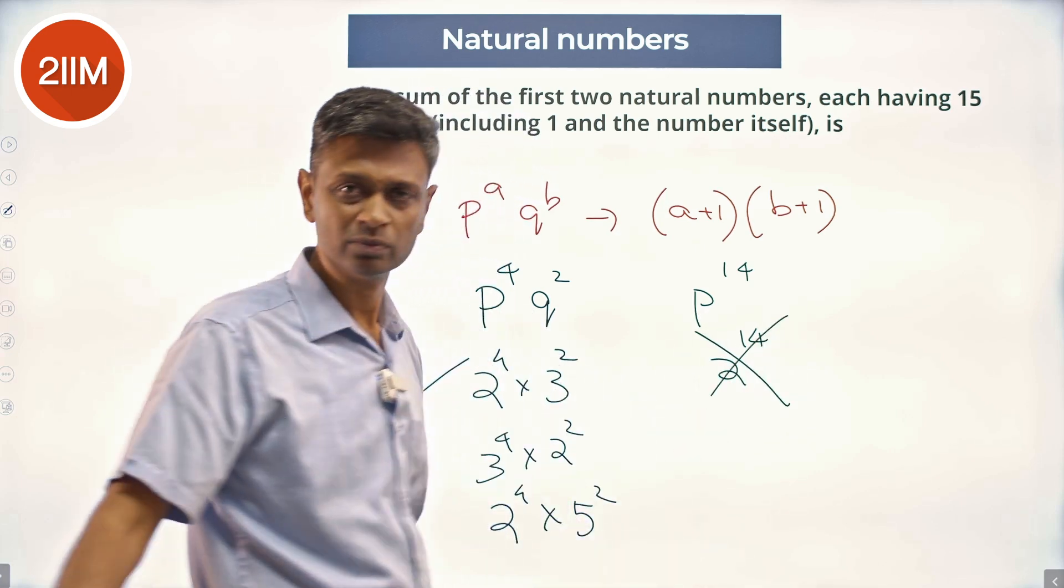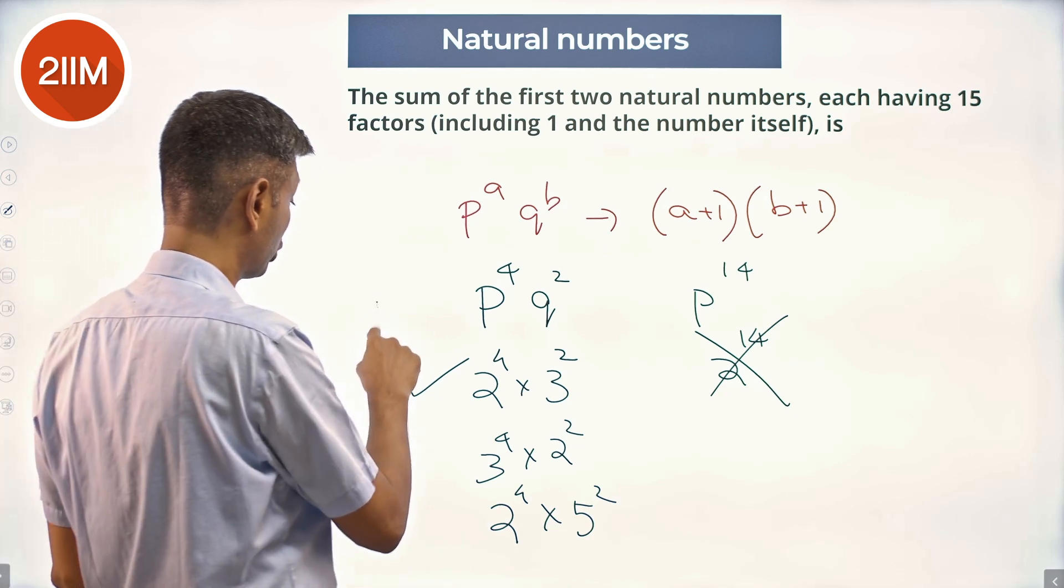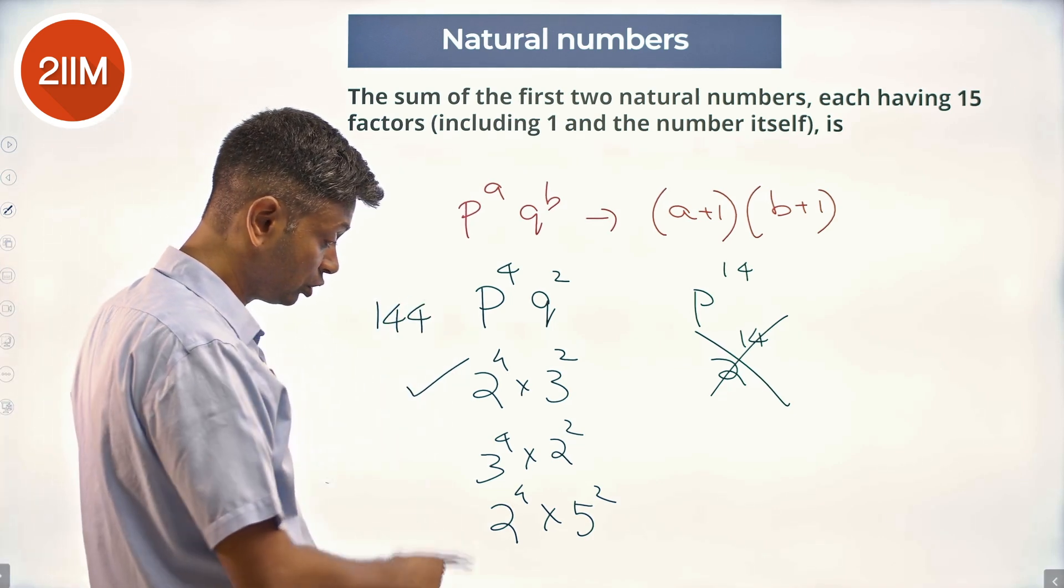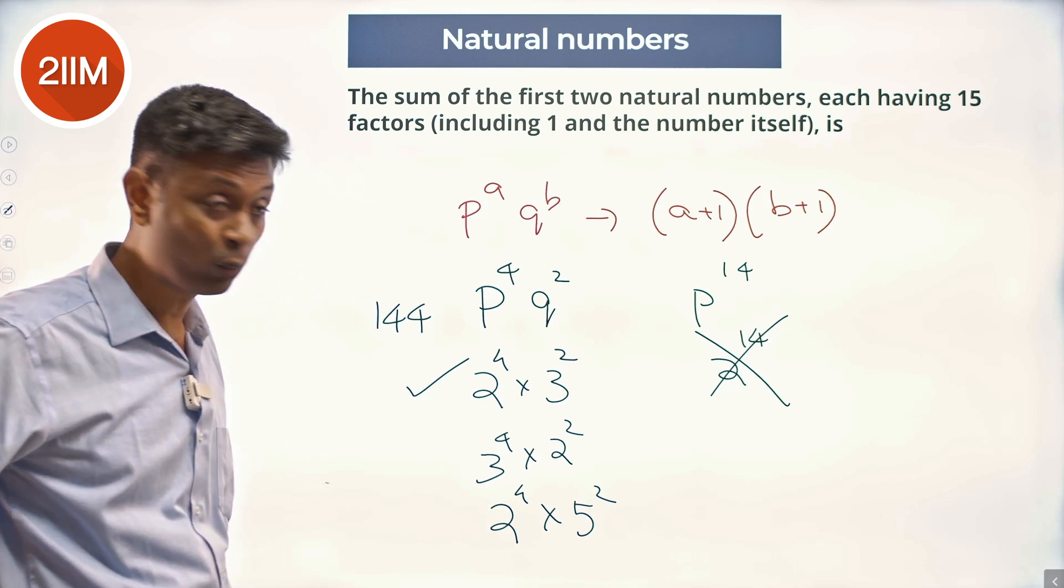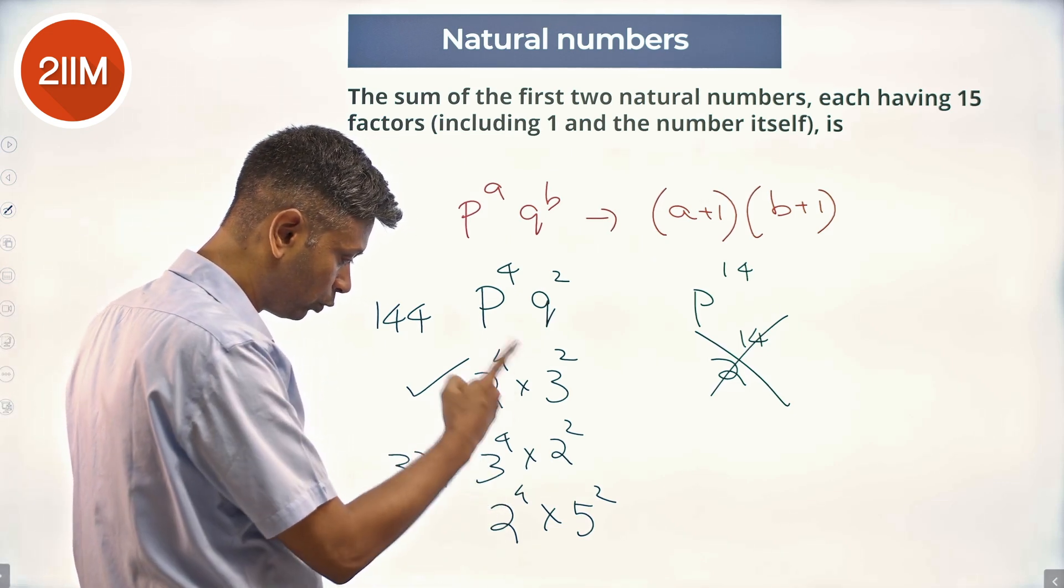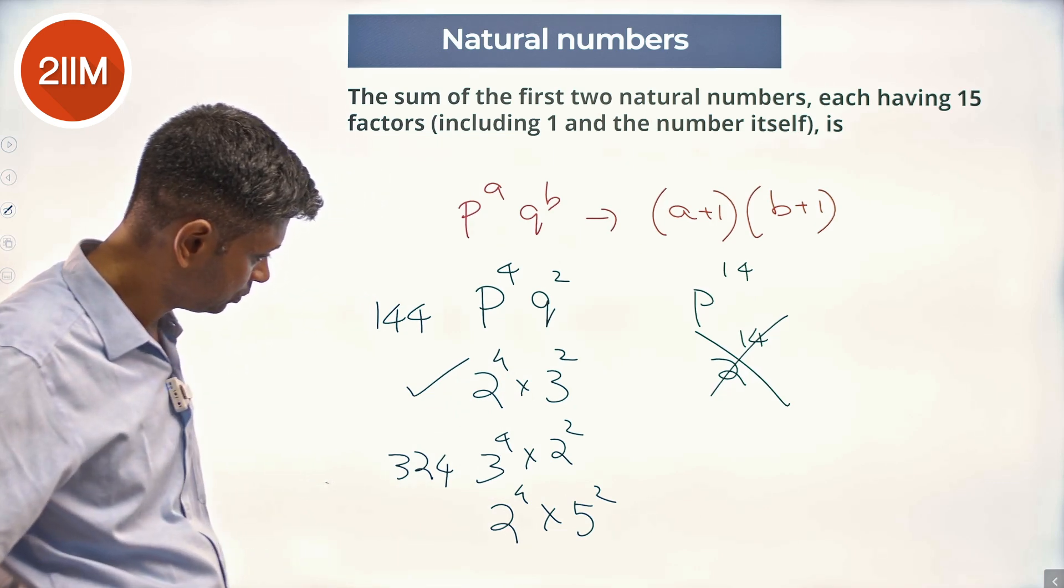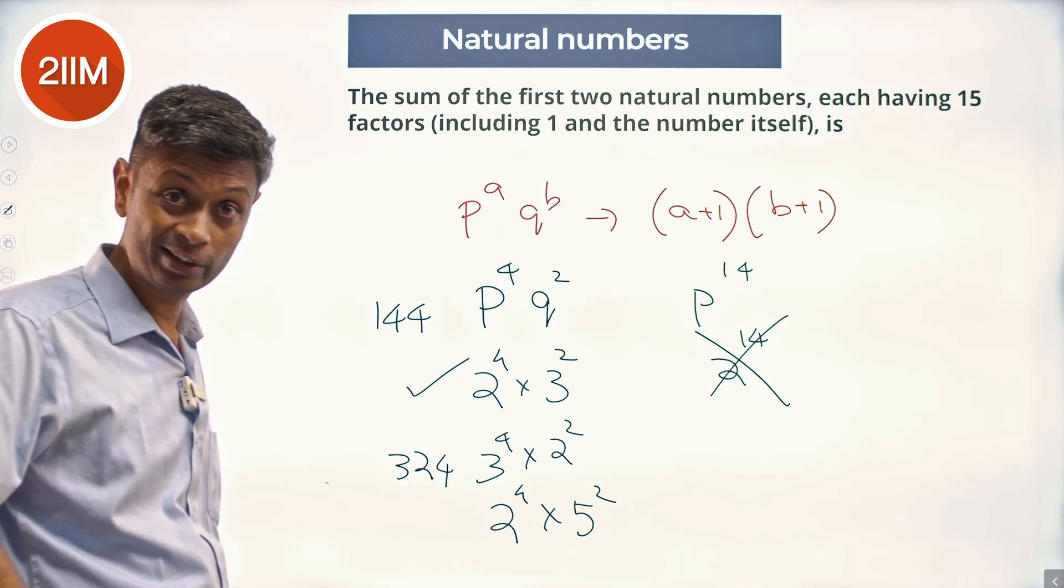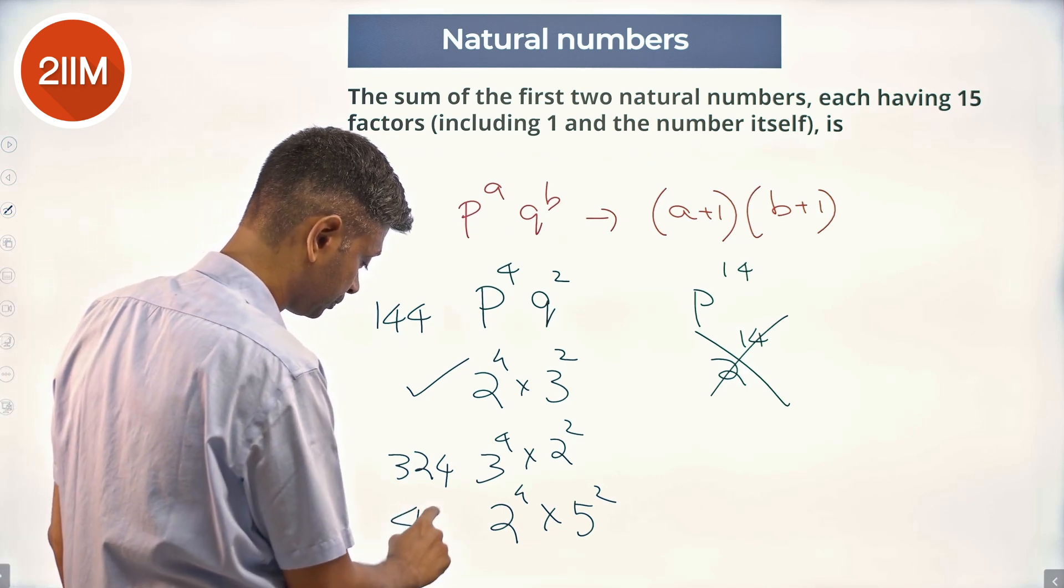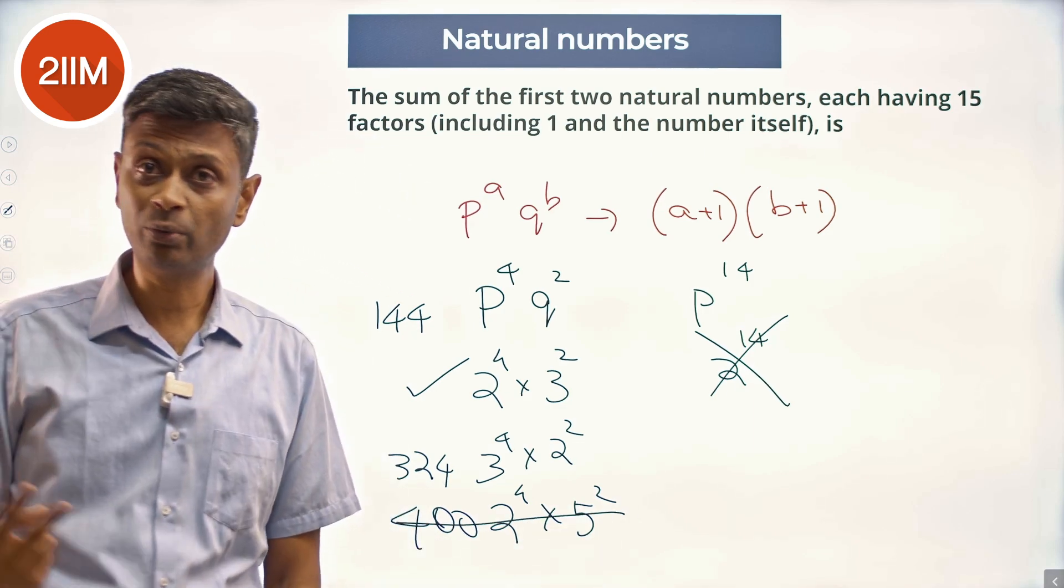16 into 9 is 144. This 3 power 4 into 2 square is 81 into 4, which is 324. 2 power 4 into 5 square, 2 square into 5 square is 100, another 2 square just 400, this is 20 square, 400. This is too great, so it's 144 and 324 are the first two numbers.